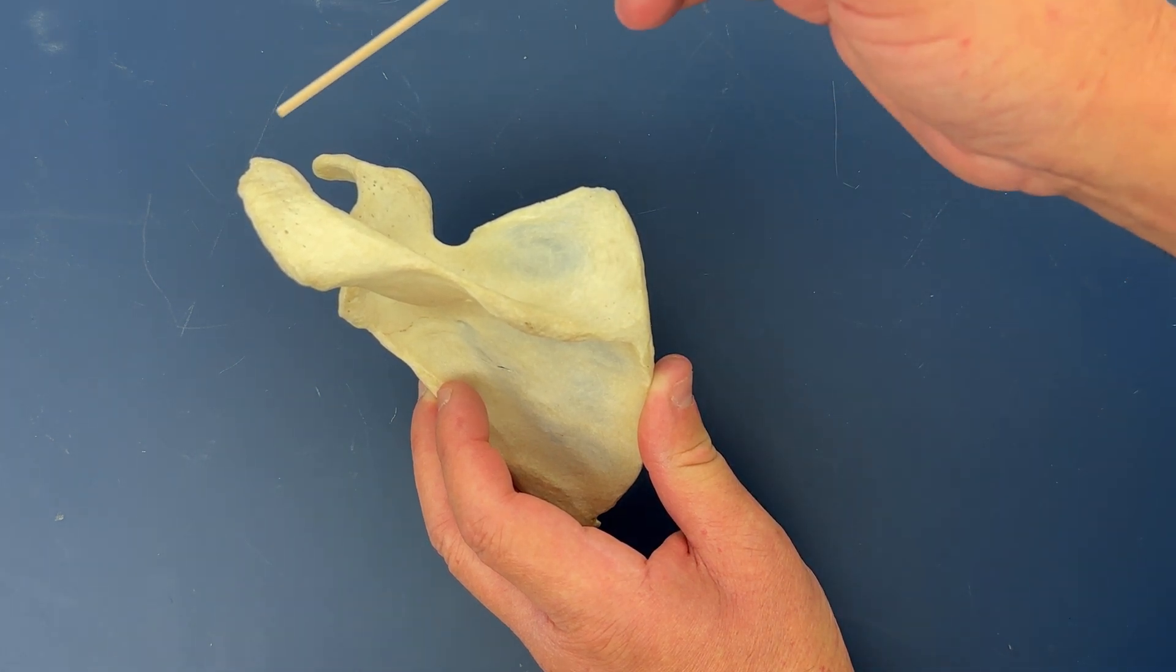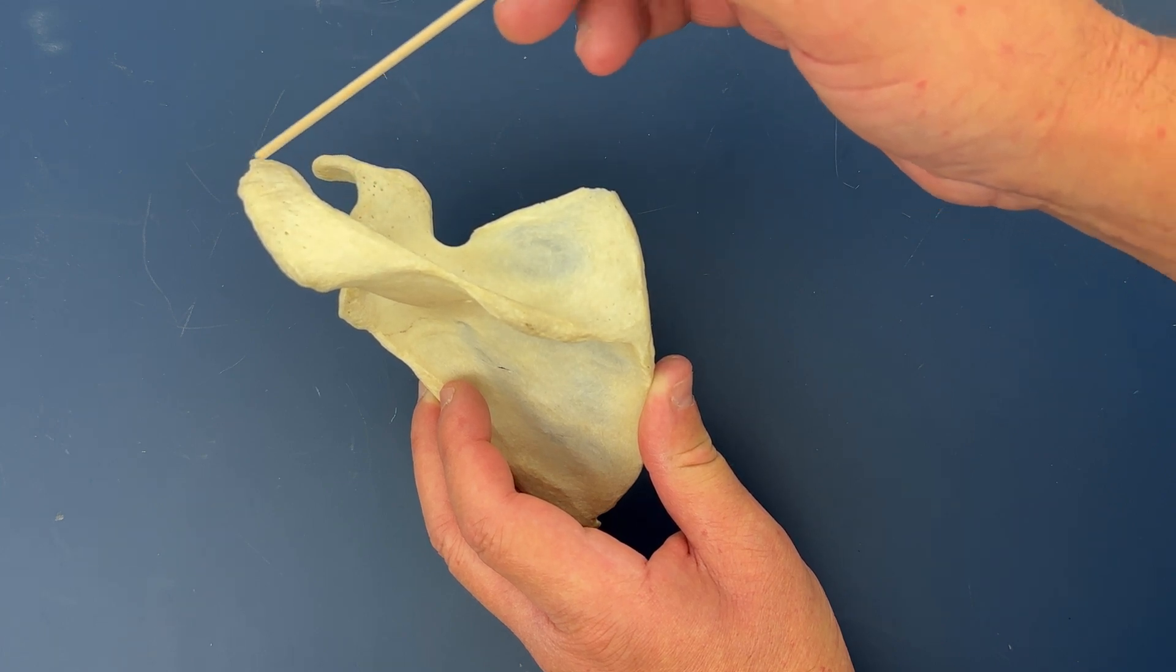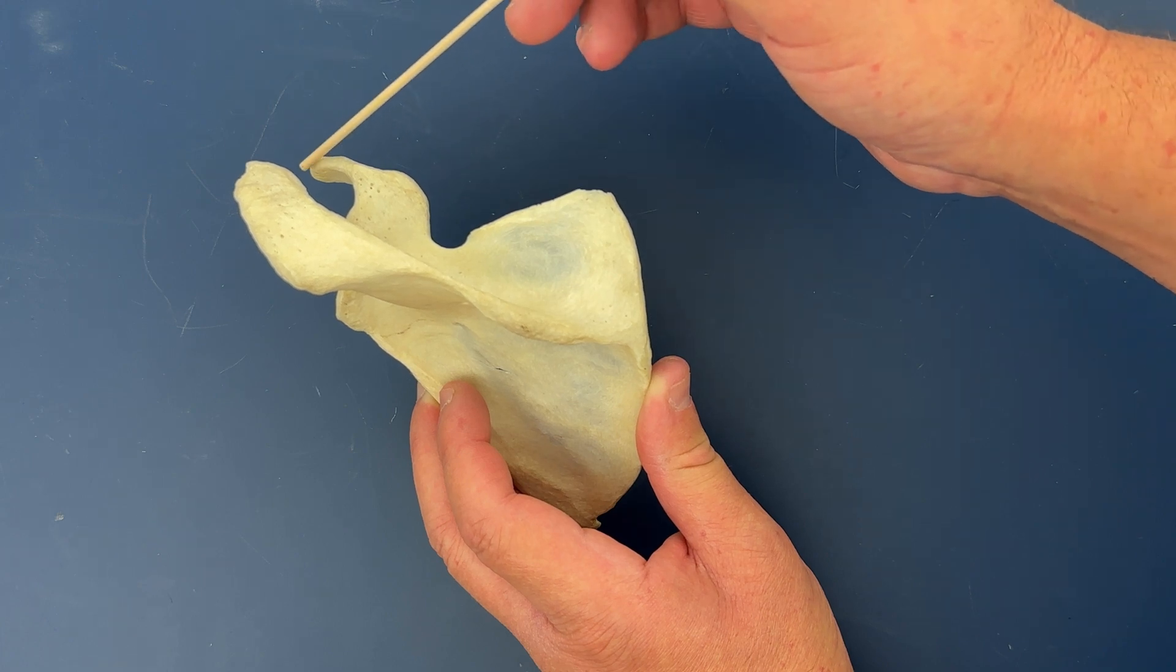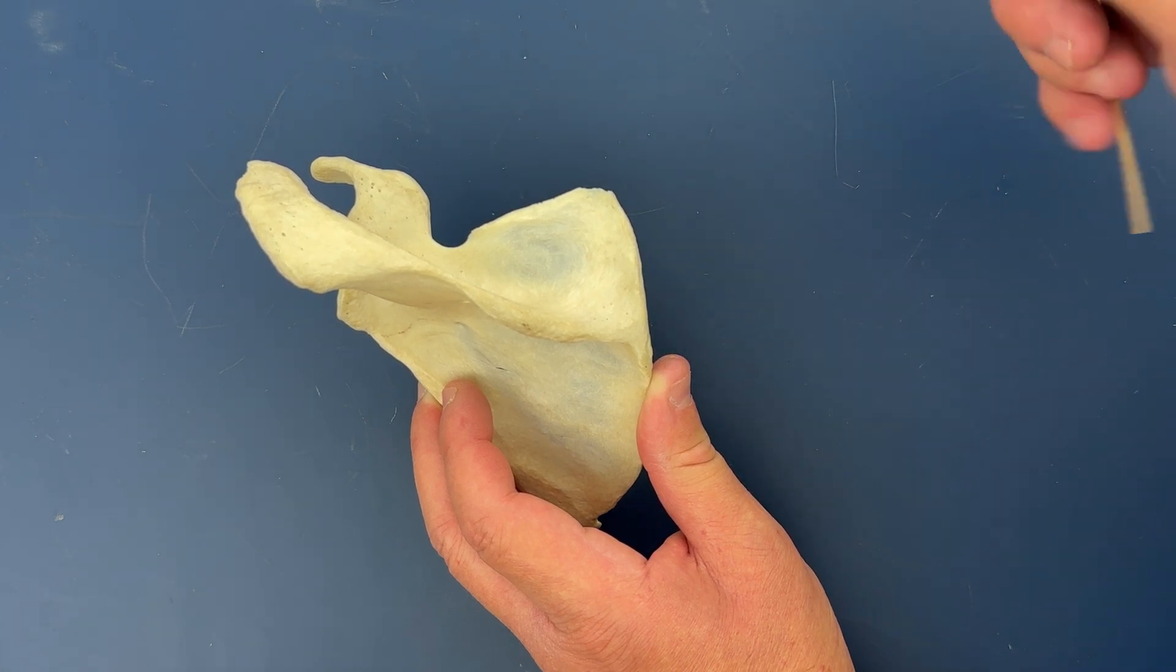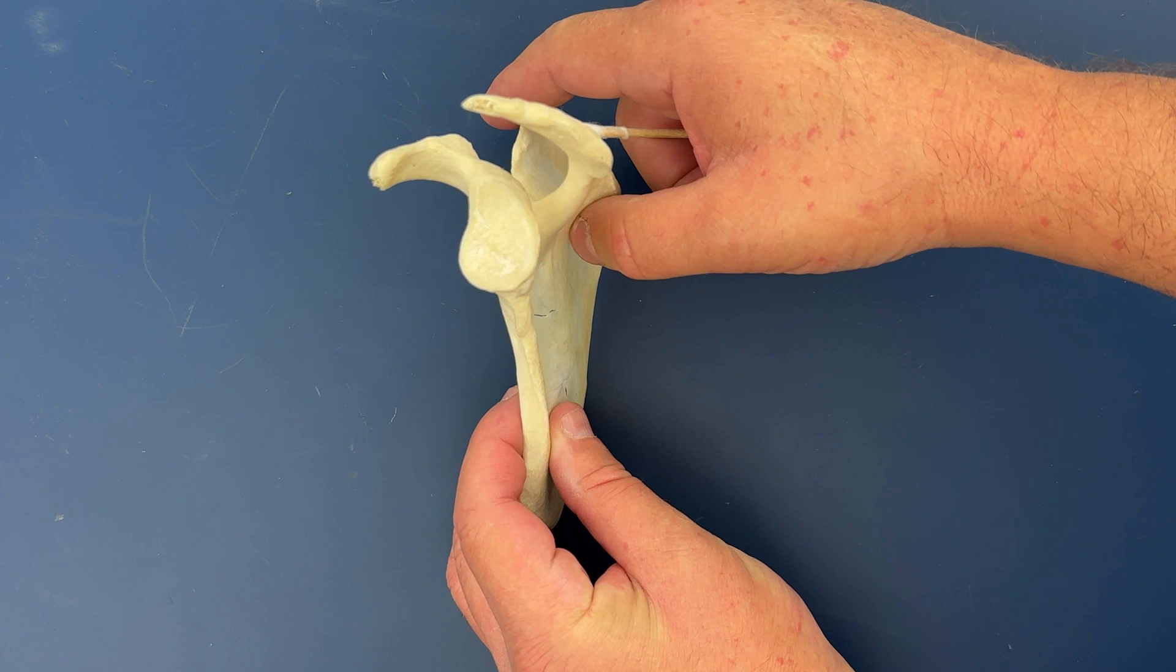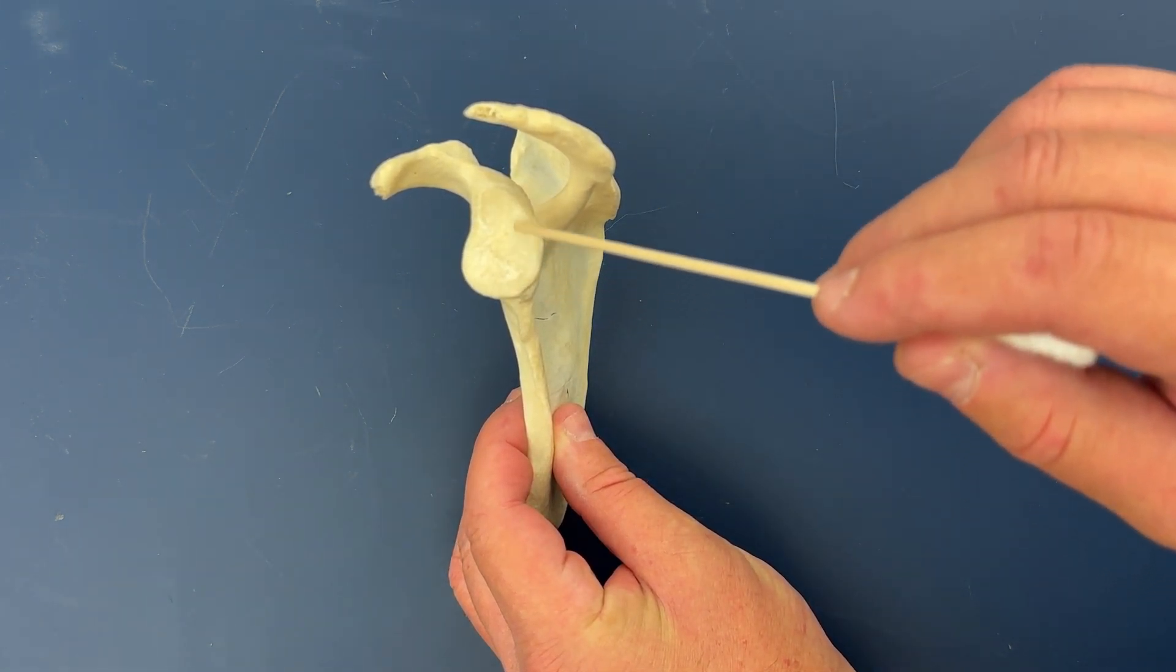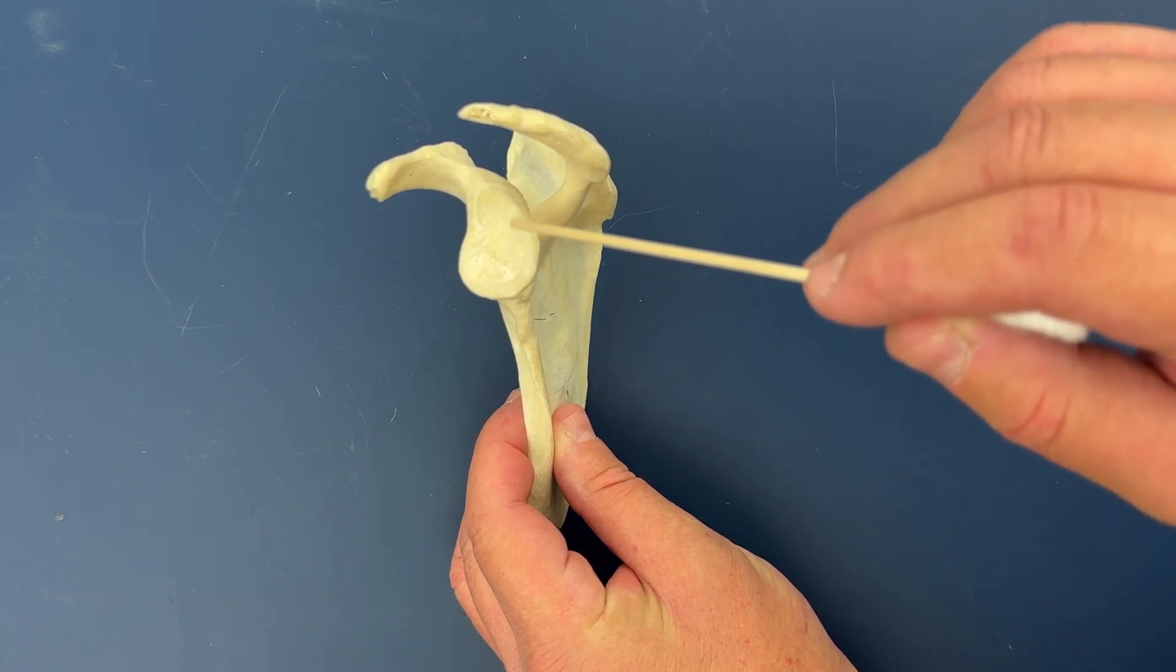From this view here we also have a very nice view of the acromion as well as the coracoid process, and rotating the bone to this view we have a very nice view of the glenoid cavity or fossa.